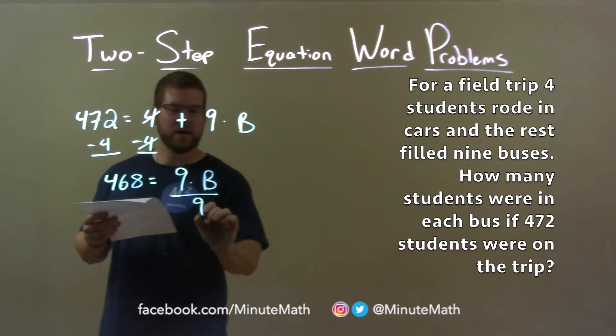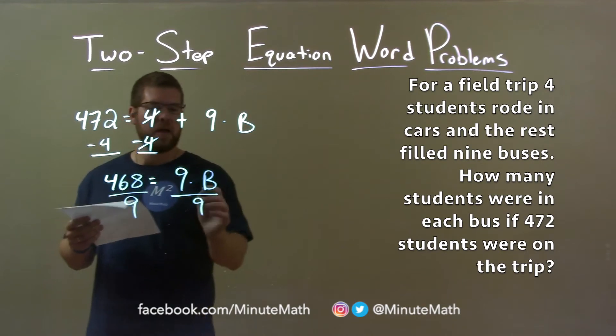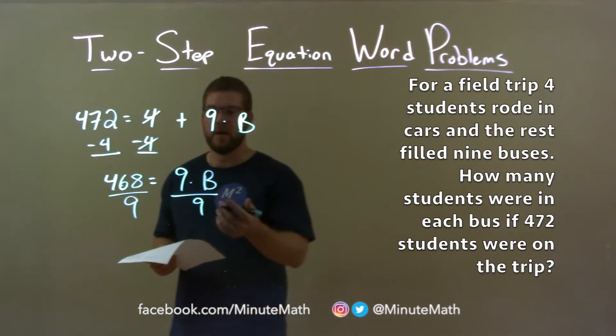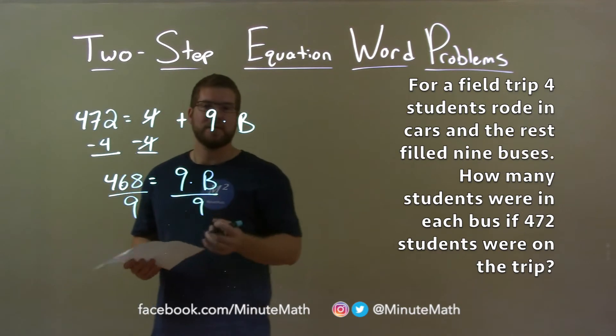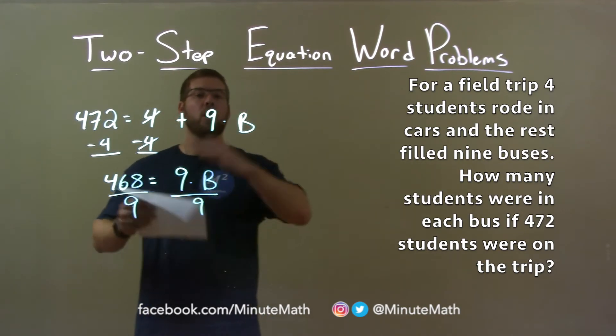Now if I divide both sides by nine, I'm left with B by itself. Nine times B represents the 468, which means that there are 468 students who rode all the buses.